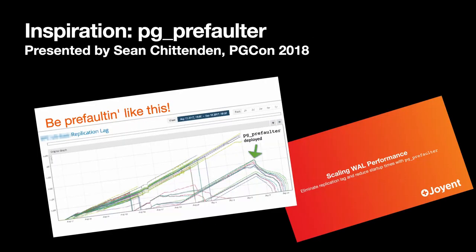If you were at PGCon 2018, this might sound familiar — Sean Chittenden presented the PG pre-falter project then, something Joyent used to fix their problem with replication latency. They were using large RAID systems with many spindles and had IO concurrency available that they weren't able to take advantage of until they started pre-faulting. The approach I'm proposing doesn't have a separate process — it runs inside Postgres as part of the main replication loop, because there were tricky problems to do with staying in sync. I also think it provides a more natural pathway towards proper asynchronous IO in the future.